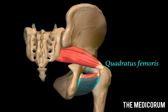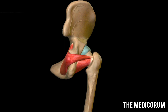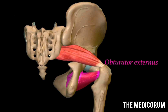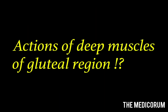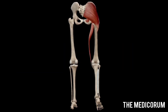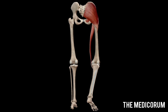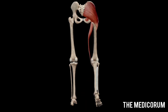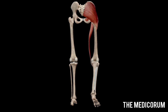After obturator internus we find the quadratus femoris, which is seen when we remove both the gemelli and obturator internus. After removing obturator internus and quadratus femoris we find the obturator externus, which is triangular in shape and covers the outer surface of the anterior wall of the pelvis. The actions of the deep muscles of the gluteal region are mostly lateral rotation of the thigh at the hip joint.